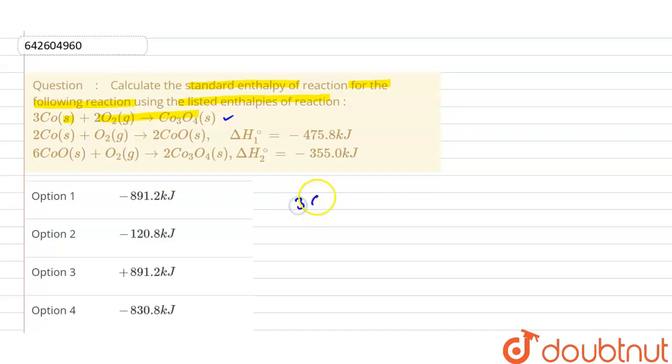So that means we can say this would be three times cobalt oxide CoO plus half of this value O₂, because we have to take half of this value, so it will be Co₃O₄. So ΔH° half of this value, ΔH₂° half of this value will be there. Now second reaction.